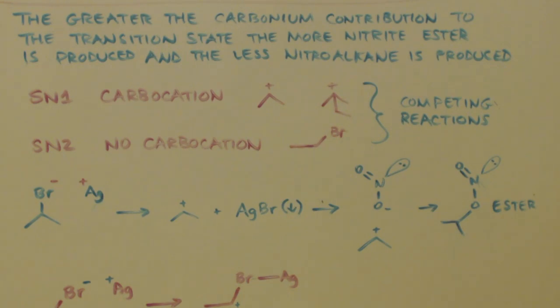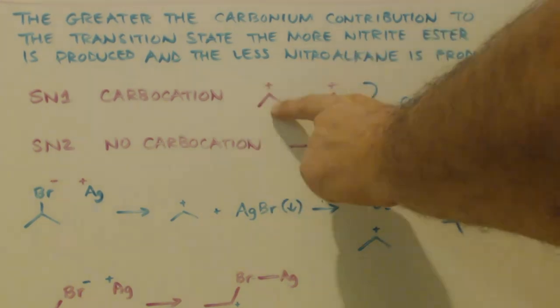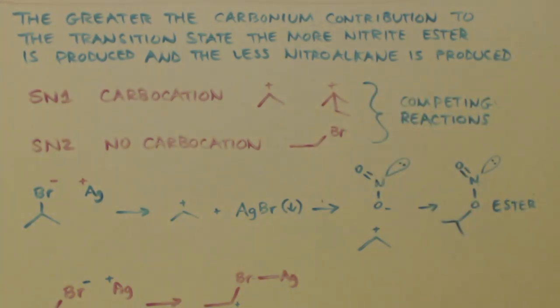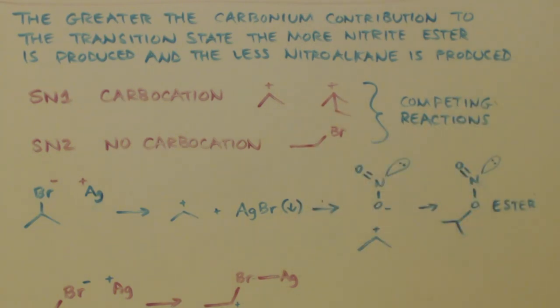But I did find out one thing. The one sentence I did find was the greater the carbonium contribution to the transition state, the more nitrite ester is produced, and the less nitroalkane is produced. What does that mean to me? Carbonium, that's like a carbocation. I think carbocation, I think SN1 reaction. So SN1 is always going to be a secondary or tertiary. If you have a secondary alkyl bromide or a tertiary alkyl bromide, you're going to do the SN1. And that means that you're going to have the nitrate ester more.